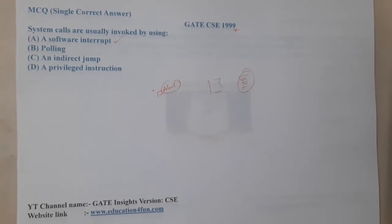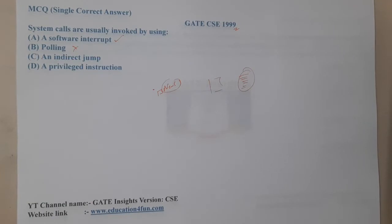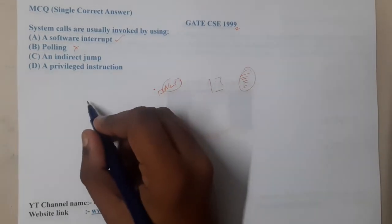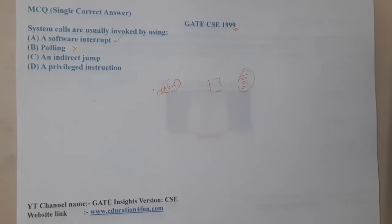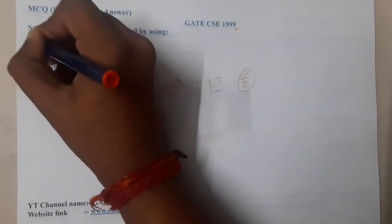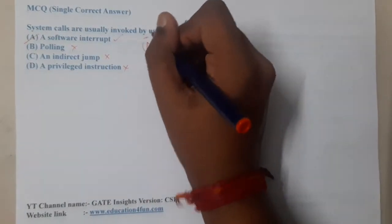Option A says it is a software interrupt, so that makes good sense. Option B says polling — polling is a concept in computer networks, so this is absolutely wrong here. Option C says an indirect jump — whenever there is any kind of jump in a program, the system call will be invoked? No. Similarly, option D says a privilege instruction — no. So option A is the correct answer.